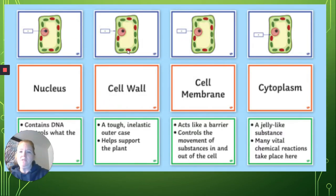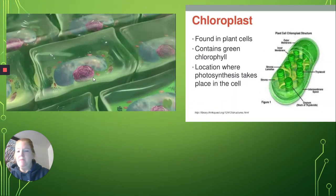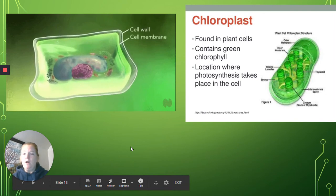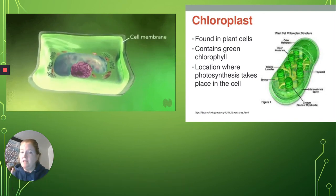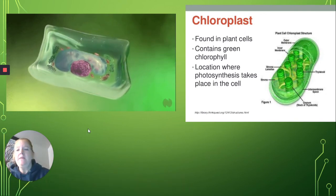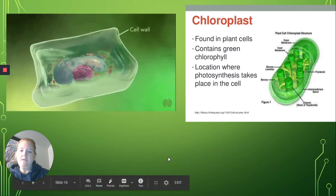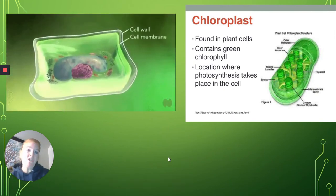All right, so the cell wall, again, is outside the cell membrane in a plant cell and helps to support it. All cells are going to have the cell membrane, but only plant cells are going to have the cell wall. And then chloroplasts, here you can see the cell wall, then further in the cell membrane, then you see the cytoplasm. The chloroplasts are also what's going to give the plant cells their greenish color.